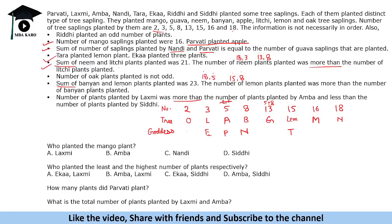The number of oak plants is not odd — that's already confirmed. The number of plants planted by Lakshmi was more than Amba and less than Siddhi. So Siddhi is greater than Lakshmi, and Lakshmi is greater than Amba. Riddhi planted an odd number of plants — the only odd number remaining is 13, so Riddhi goes to 13. Then Siddhi is 18, Lakshmi is 16, and Amba is 2.